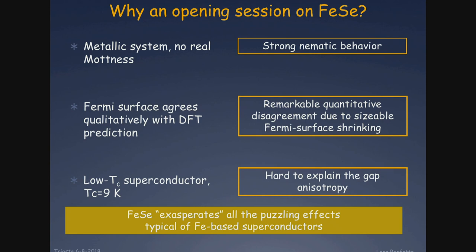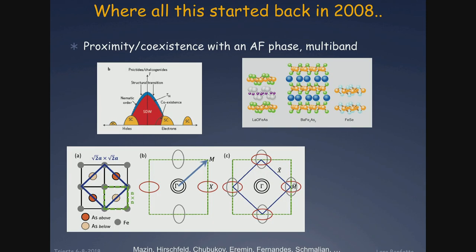To understand why iron selenium is particular, let me make a very brief introduction to the physics of iron pnictides. You will have a lecture next week, so for the students, just try to catch some ideas so you're not lost in all the talks this week. These are materials made by layers of iron and arsenide, or iron selenium, with other layers in between. The phase diagram is similar somehow to what we've seen in other correlated systems.